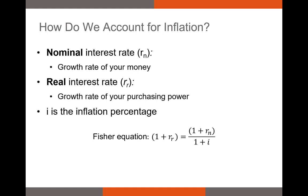The primary way we adjust returns for inflation is using the Fisher equation: 1 plus the real return equals 1 plus the nominal return divided by 1 plus the inflation metric — which is where we put the change in the CPI. There's also a modified form: real equals nominal minus inflation, but the Fisher equation is the more accurate metric.